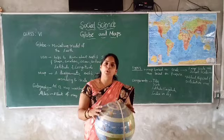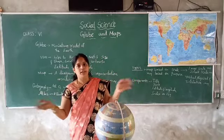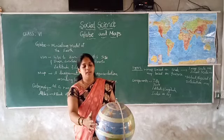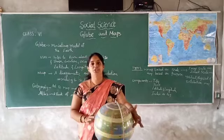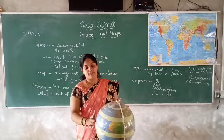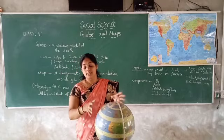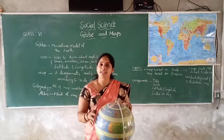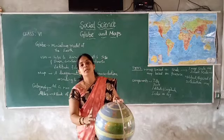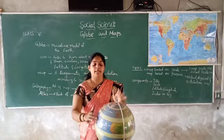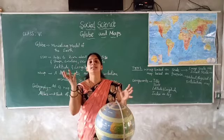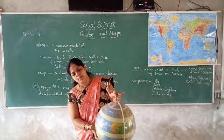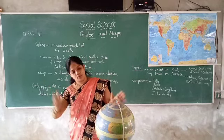What are the uses of this globe? Globe is a miniature model of the earth. First of all, it is to know about the shape of the earth and the size of the earth. Shape means it is looking like a ball. And another thing is this globe is little bit tilted to the right side — that's natural.